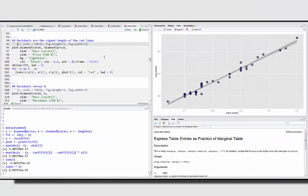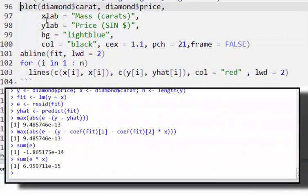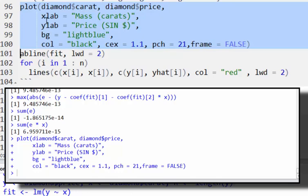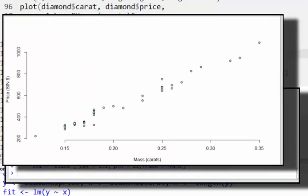So, the residuals are the signed lengths of the red lines that I'm going to show in the following plot, and I'm going to do this using base R graphics, just so I mix a little bit of base R with some ggplot graphics. So, I'm going to create my plot here.